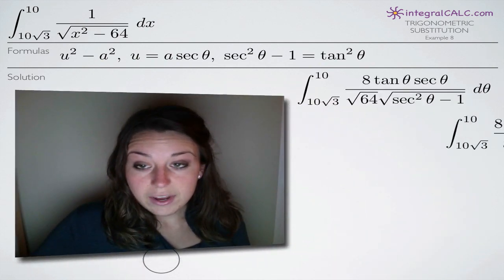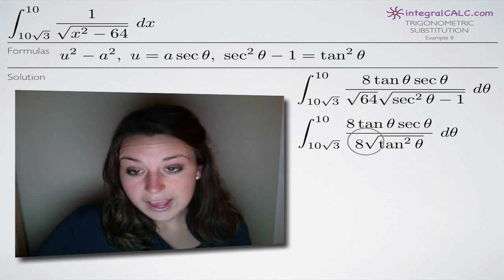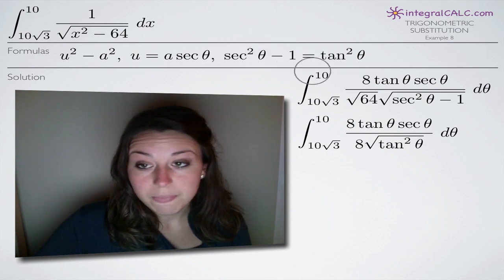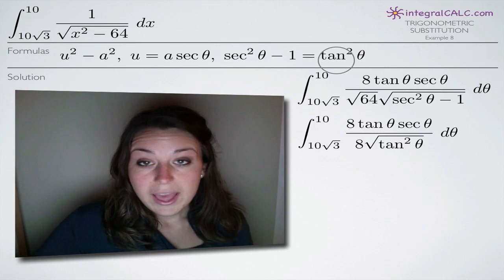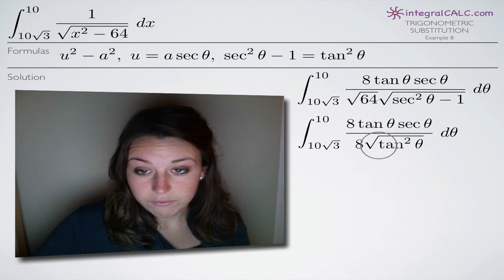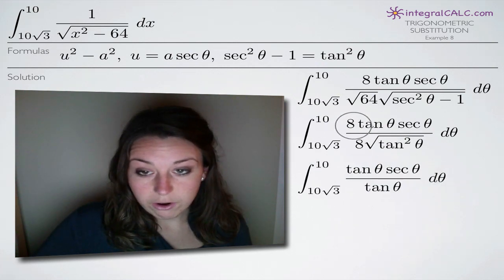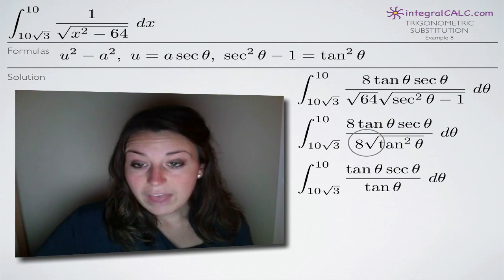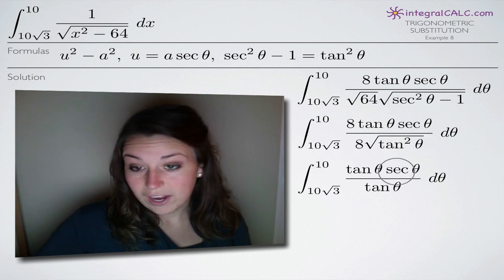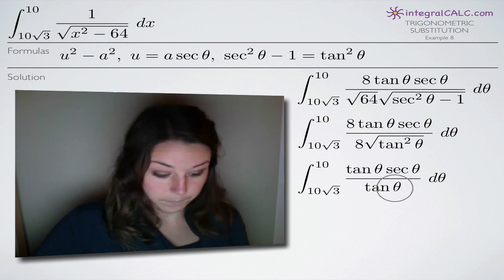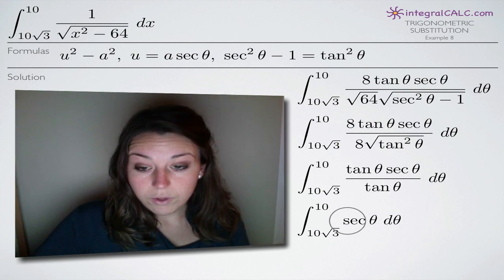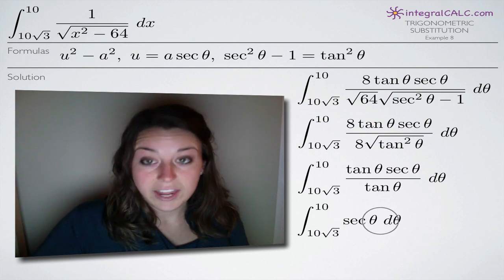The square root of 64 is 8, and we now use the third part of our formula: secant squared theta minus 1 equals tangent squared theta. So we substitute tangent squared theta in place of that expression. We cancel the 8's in numerator and denominator, and the square root of tangent squared theta is just tangent of theta. We then cancel the tangent of theta in numerator and denominator, and our integral reduces to just the integral of secant of theta d theta.